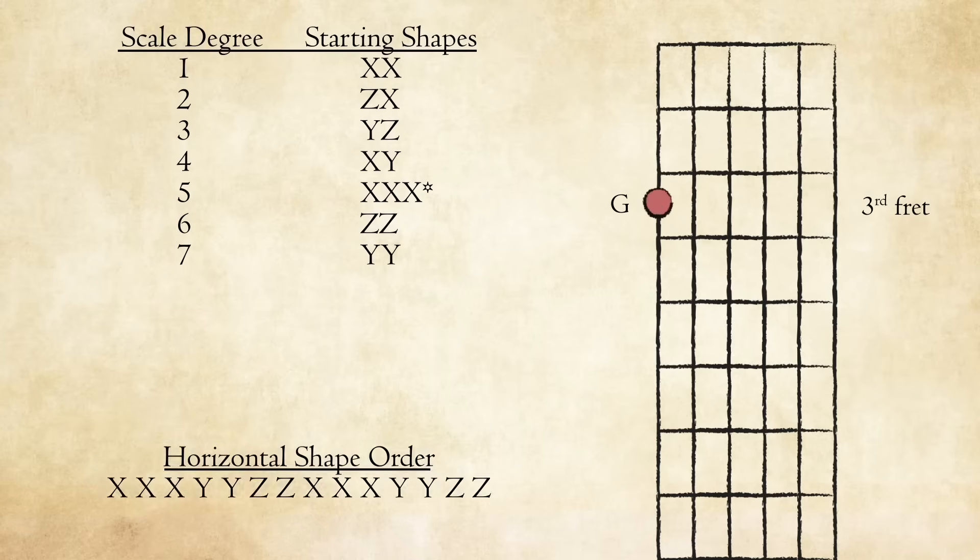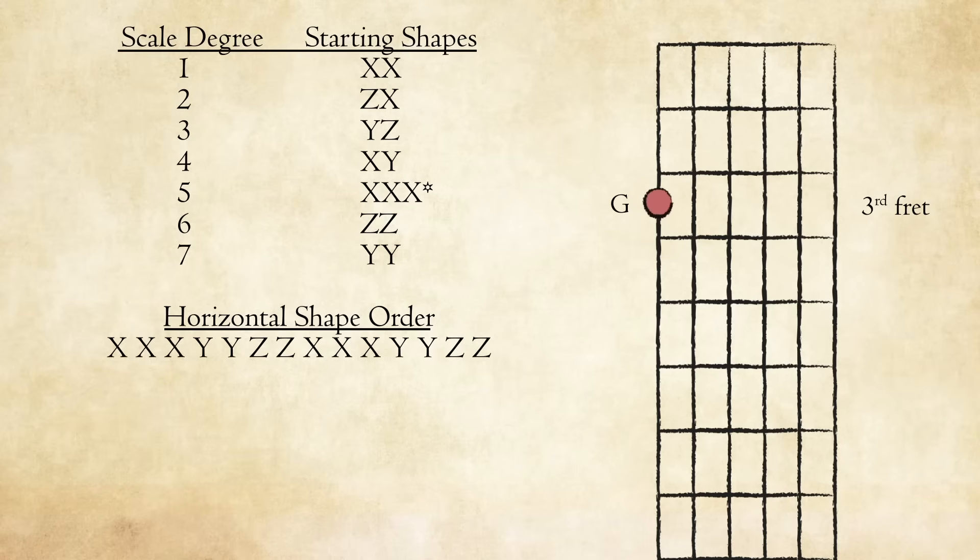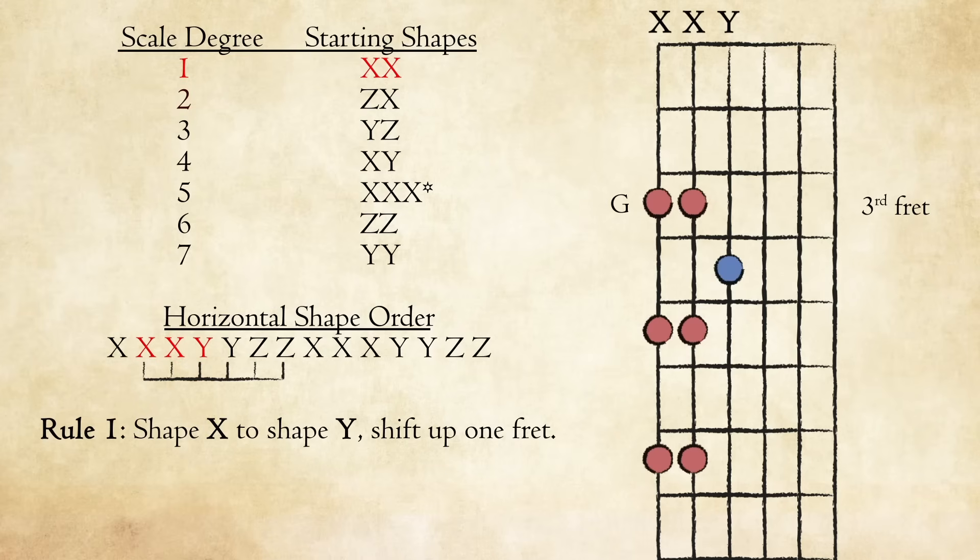Let's do a few examples to see how it all fits together. Say we want to play a G major scale starting on the first scale degree. We find G on the sixth string of our fretboard and then look at the chart and remember the horizontal ordering of the shapes. The pattern for scale degree 1 starts with two X shapes. Play those first two shapes. Next comes shape Y, and with it, the rule to shift up one fret when moving from shape X to shape Y.